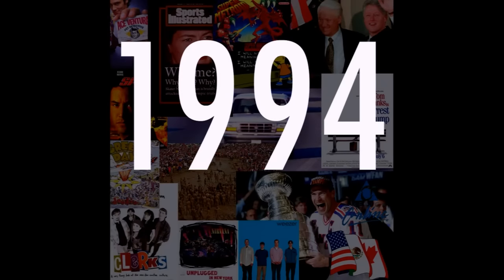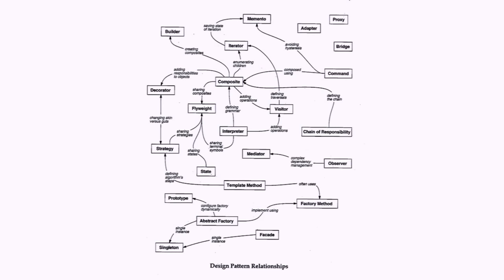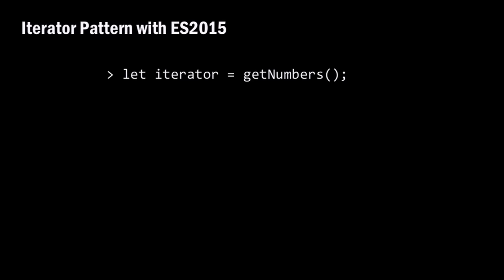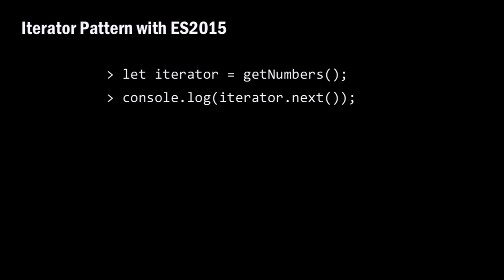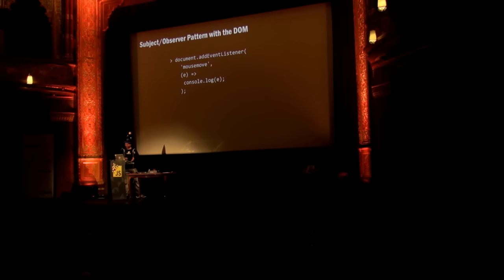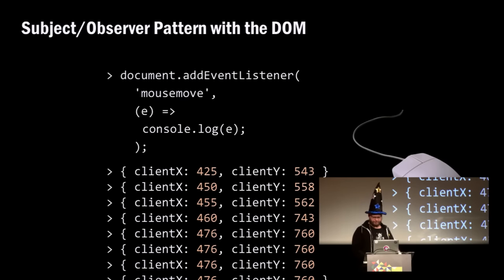Instead, we took a different approach and went back to 1994 and the Design Patterns book. Iterator and observer should be connected. We have the idea of a push-based collection and a pull-based collection. With ES2015, we have first-class iterators where we call .next. The same thing applies with the subject-observer pattern as implemented in JavaScript — any time you add an event listener, that's the subject-observer pattern. Any time I move the mouse, I get values pushed at me.